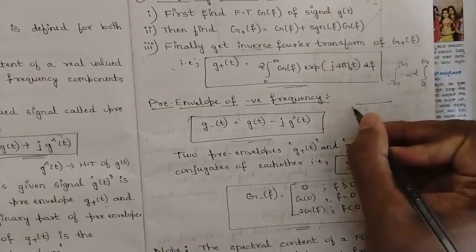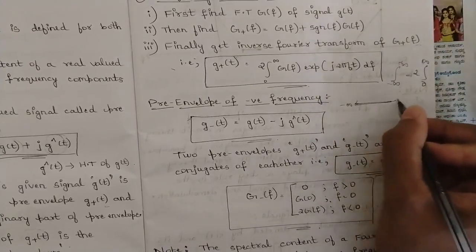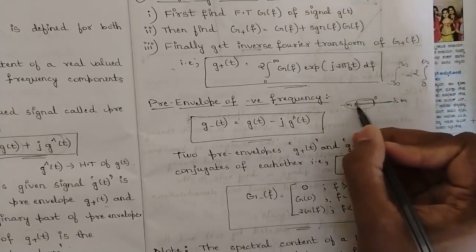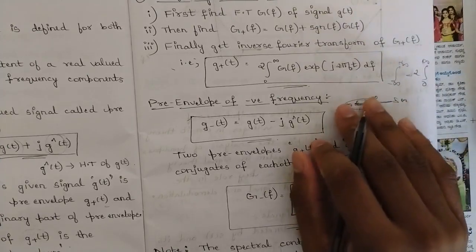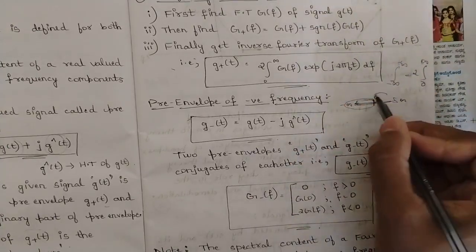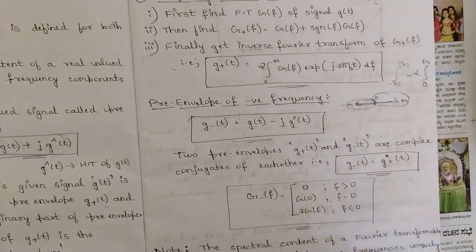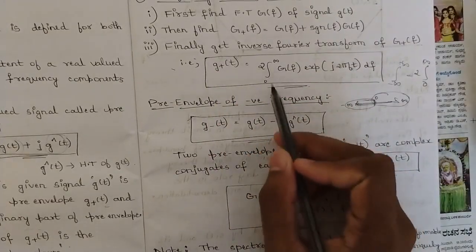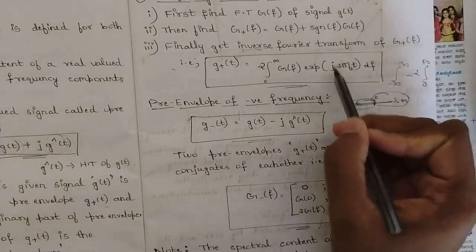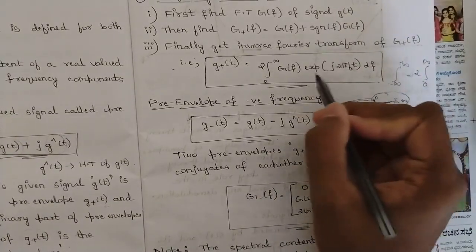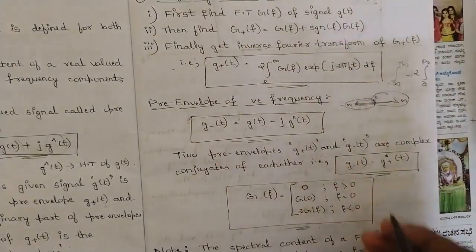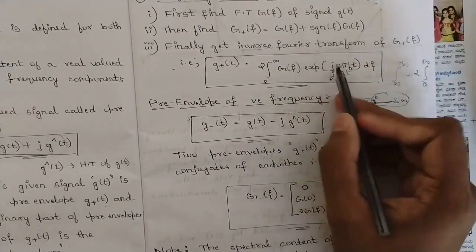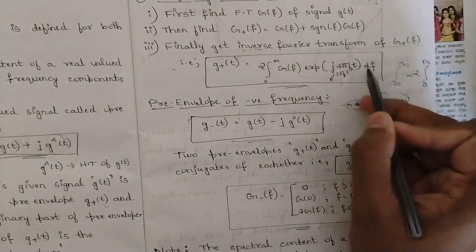If we consider the frequency axis from minus infinity to plus infinity with zero at center, all negative components are eliminated and shifted to the positive side. So the range from minus infinity to zero becomes two times zero to infinity. Therefore G+(t) equals two times the integral from zero to infinity of G(F)·exp(j2πFT)·dF. EXP of j2πFT and e to the power j2πFT are one and the same.